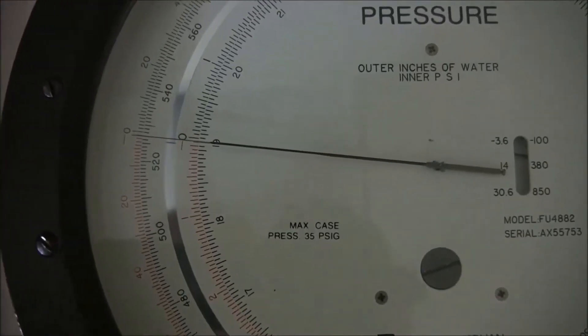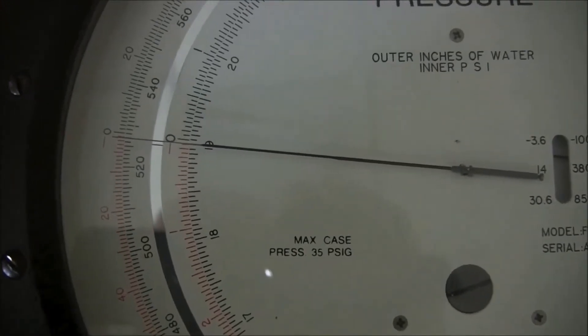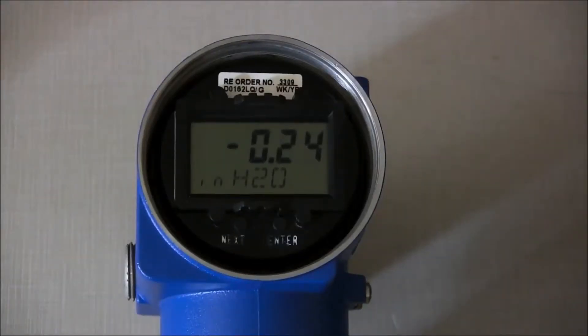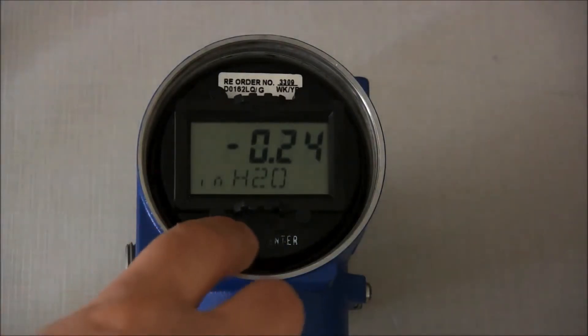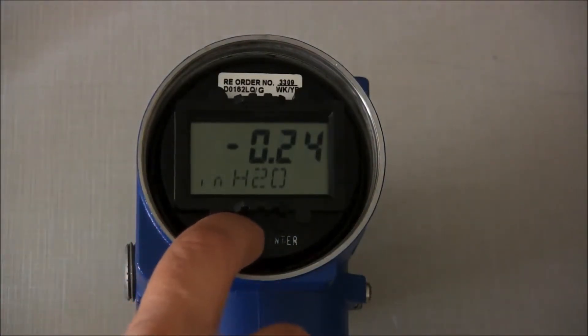With the pressure calibrator set to our lower range value pressure of 0, we would press the Next button three times and the display should indicate calibrate.